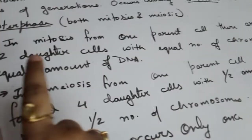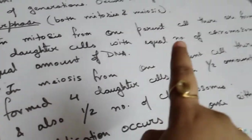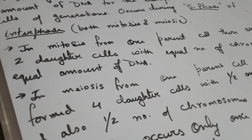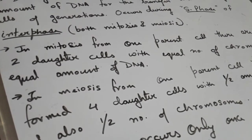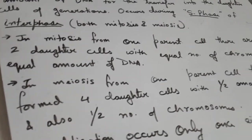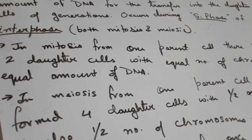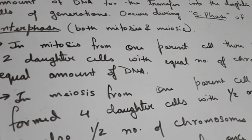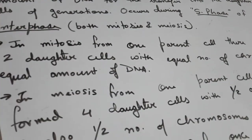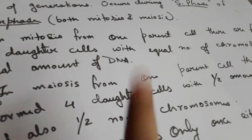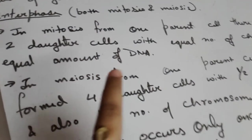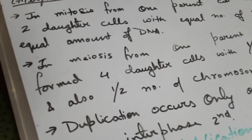In mitosis, from one parent cell, two daughter cells are formed with an equal number of chromosomes and equal amount of DNA. Mitosis is also known as equational division because the division distributes the DNA content equally into the subsequent daughter cells. From one parent cell, two daughter cells are formed with the same number of chromosomes and the same amount of DNA.